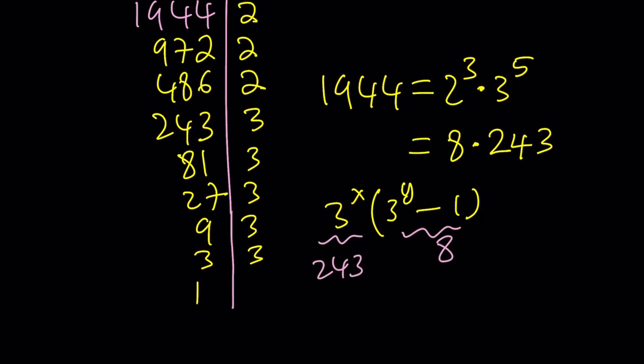But does that work? Well, if 3 to the y minus 1 is 8, then 3 to the y is 9, then y is 2, x is 5. So, we got a solution. So, 5 comma 2 is a solution, right? But is that the only solution?